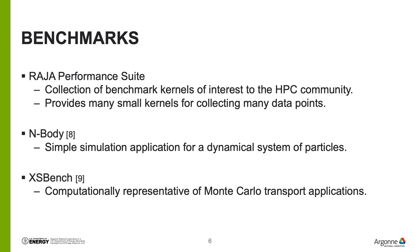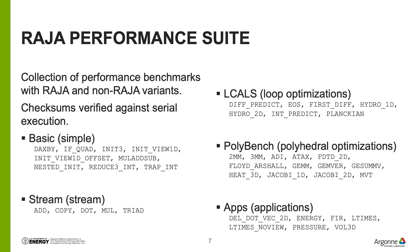The Raja Performance Suite is a collection of performance benchmarks implemented in a variety of programming models with both Raja and non-Raja variants. Raja is a programming abstraction that sits on top of other programming models to enable easy switching between various programming models, such as HIP, CUDA, and OpenMP target.